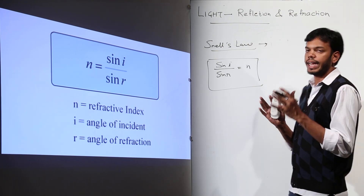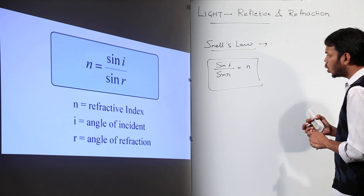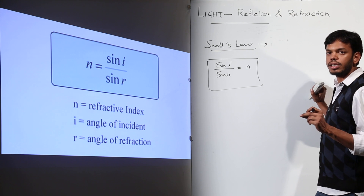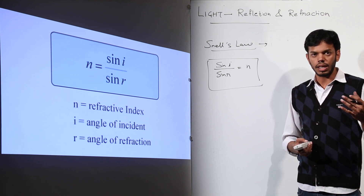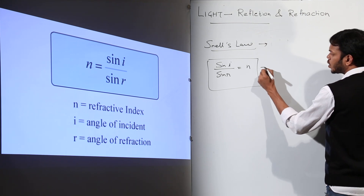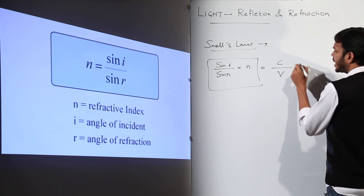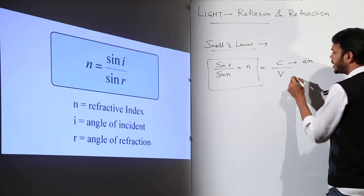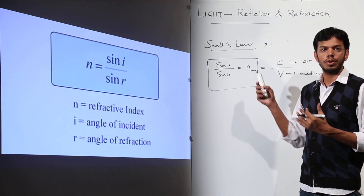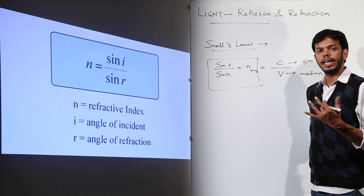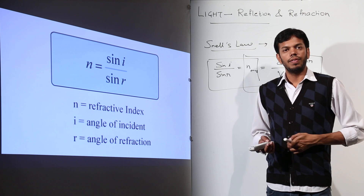So sine I upon sine R is Snell's law — the ratio of sine of angle of incidence to sine of angle of refraction equals the refractive index. Refractive index is also defined using speed: it equals the speed of light in air divided by the speed of light in that particular medium. So there are two formulas for refractive index: the sine ratio formula and the speed ratio formula.